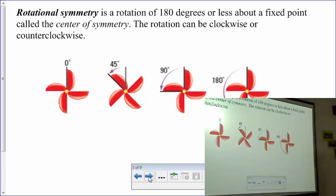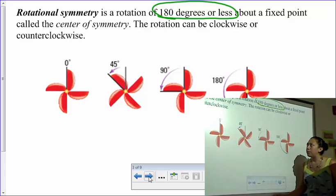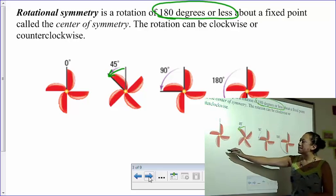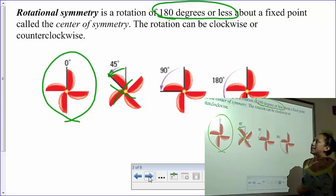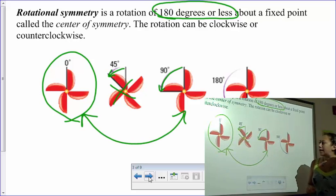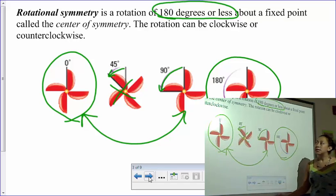Rotational symmetry. So we're not going to do a line through the middle anymore. We want to see if we can actually turn the object and let it map onto itself. Rotational symmetry is a rotation of 180 degrees or less. I might be able to rotate it 45 degrees and it's the exact same picture. In this case, it's not the same picture as the original. So 45 degree rotation does not map it onto itself. 90 degree rotation though, notice that these two images are exactly the same. So this has rotational symmetry at 90 degrees and again at 180 degrees.